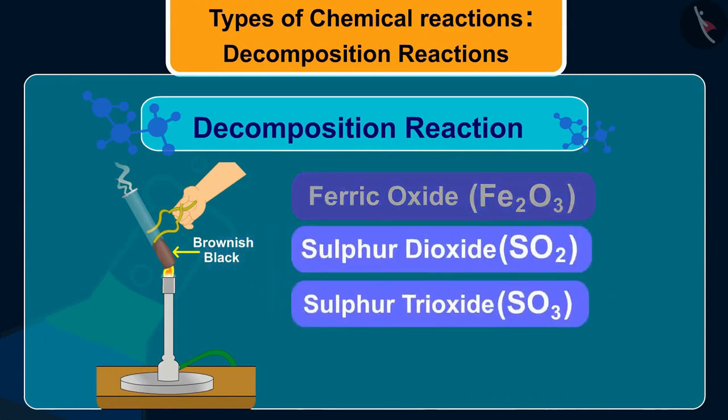Ferric oxide is a solid, while SO2 and SO3 are gases.